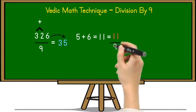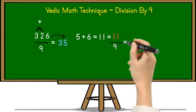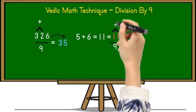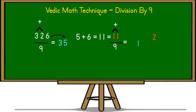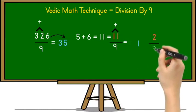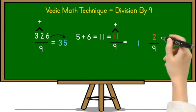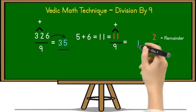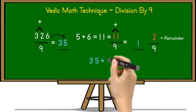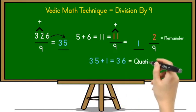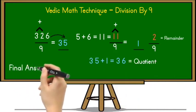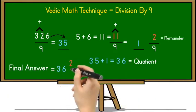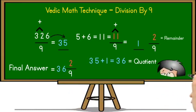Since 11 is greater than 9, we divide again using the same strategy. Write down the 10th place digit 1, then add the unit and 10th place digits of 11: 1 plus 1 equals 2. Divide 2 by 9 — not possible because 2 is smaller than 9. So 2 is the remainder. To find the quotient, add 35 and 1 together: 35 plus 1 equals 36, which is the quotient. The final answer is 36 and 2/9, where 36 is the quotient and 2 is the remainder. If you divide 326 by 9, you get quotient 36 and remainder 2.